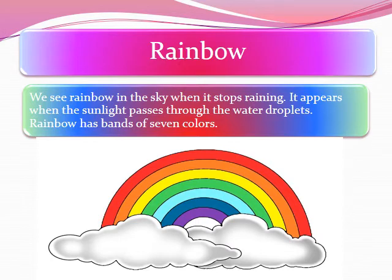Rainbow. We see a rainbow in the sky when it stops raining. It appears when the sunlight passes through the water droplets. Rainbow has bands of seven colors.